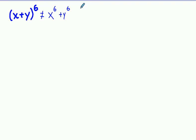For example, if we had a binomial squared, like in this case x plus y squared, our answer is going to be x squared plus 2xy plus y squared.